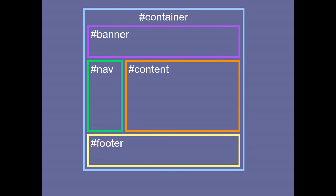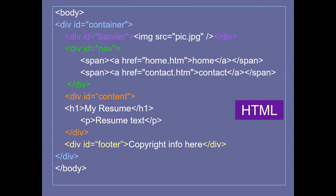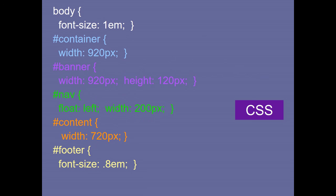To create this layout: a div with id 'container', inside it a division with an image for the banner, then a div for nav with links, then a content section with resume text, and a div for the footer with copyright information, then closing the container div. In CSS you can fix the container width, banner height and width, navigation float positions, content font size, and footer styling.